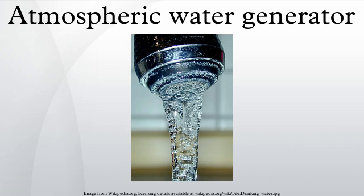An atmospheric water generator is a device that extracts water from humid ambient air. Water vapor in the air is condensed by cooling the air below its dew point, exposing the air to desiccants, or pressurizing the air. Unlike a dehumidifier, an AWG is designed to render the water potable. AWGs are useful where pure drinking water is difficult or impossible to obtain, because there is almost always a small amount of water in the air that can be extracted.